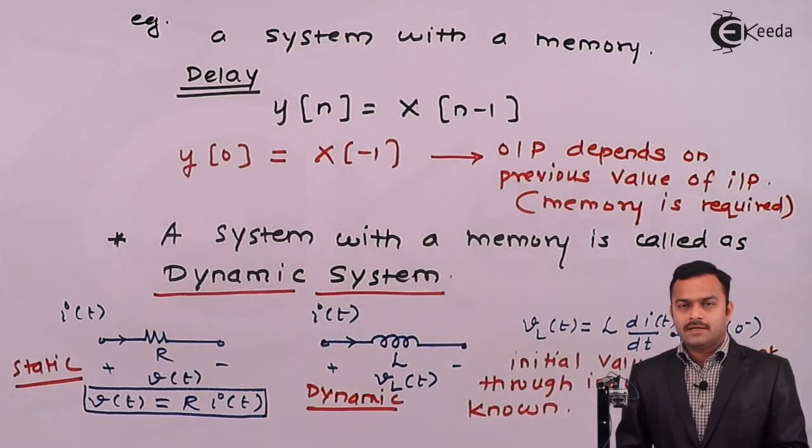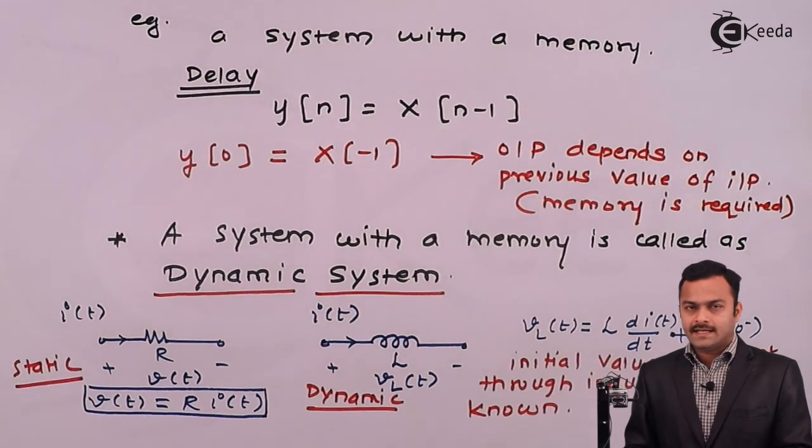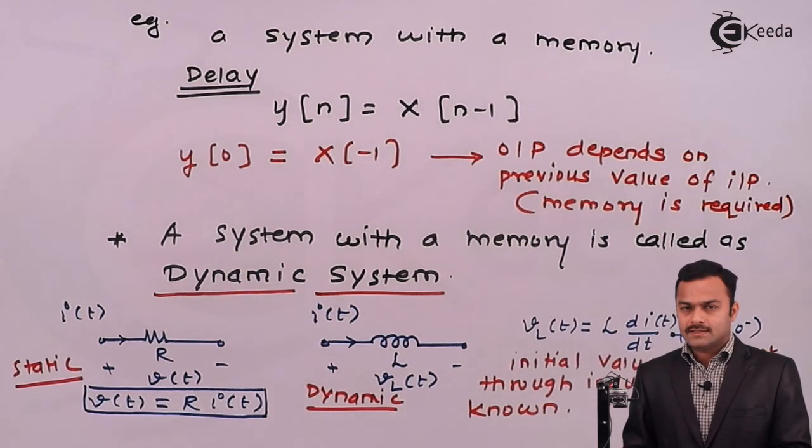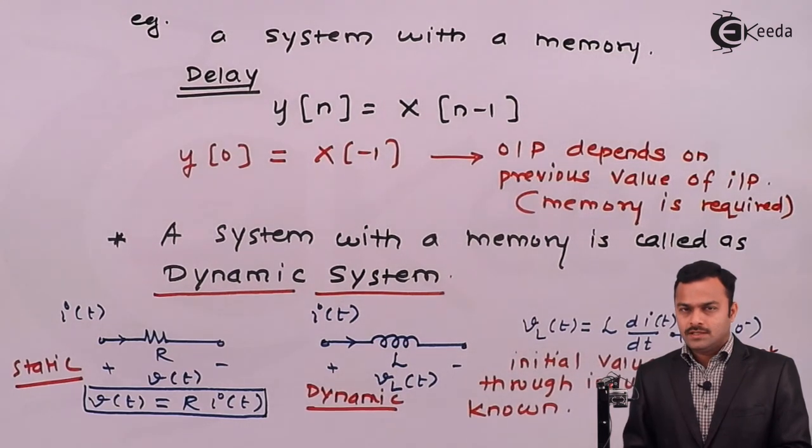So in this video we have seen based on the memory required or not, system can be classified as static and dynamic. Static means memoryless, do not require memory, output depends only on the present value of input whereas dynamic is a system with a memory, can depend upon previous or future values of the input. Thank you.